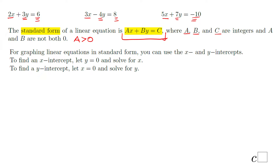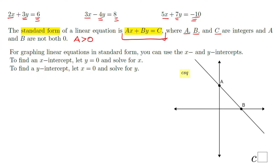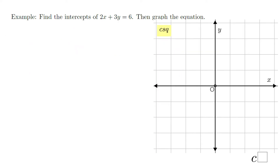This standard form is very useful, especially when you want to graph the equation, because you can use what we call x and y intercepts. To find the x-intercept, make y equal to zero and solve for x. To find the y-intercept, make x equal to zero and solve for y. You get two points and you can graph the line.